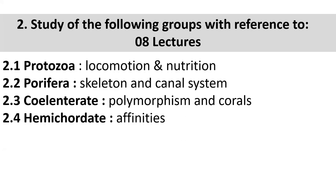Chordata and non-chordata are linked to Hemichordata through affinities. Hemichordata shows some features of non-chordata and some features of chordata. So it is the combination - the amalgamation of both. That is what Hemichordata affinities means.